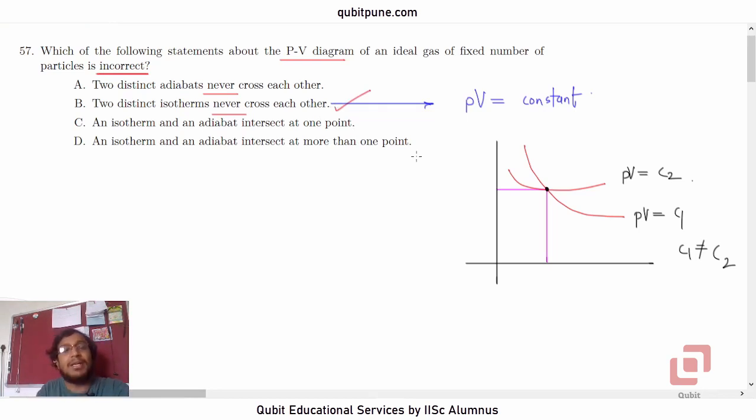We can argue similarly for option A. That is two distinct adiabates also never cross each other. So, it has to be either option C or D.